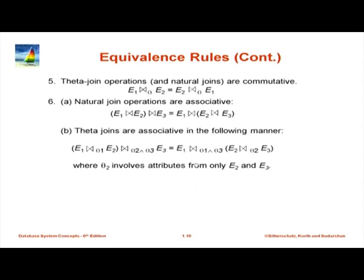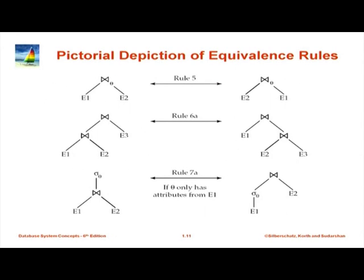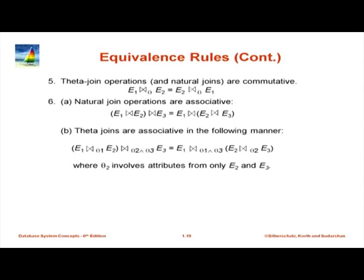How do you extend associativity for theta joins with conditions? The intuition is that when I join E2 and E3, I can only apply those parts of the condition that involve attributes from E2 and E3. Then when I join E1 with that result, I can apply all the remaining conditions. Some joint conditions involve E2 and E3, so those can be done in the first join; those involving E1, namely theta3, have to be done later in the final join. That is the only minor difference.